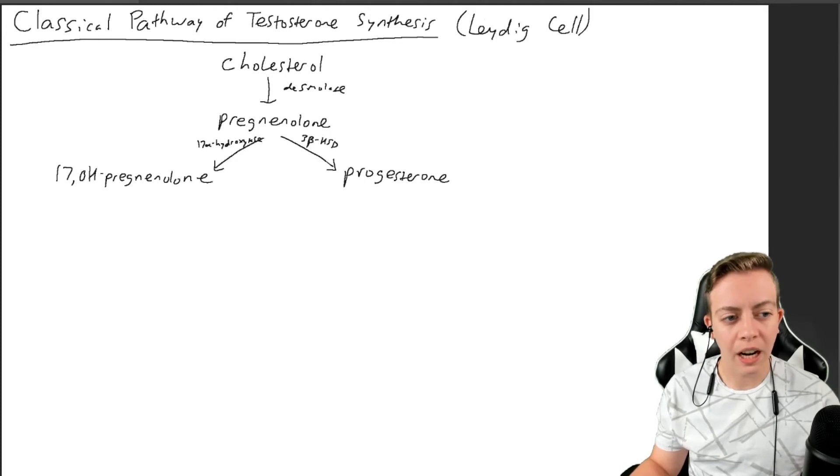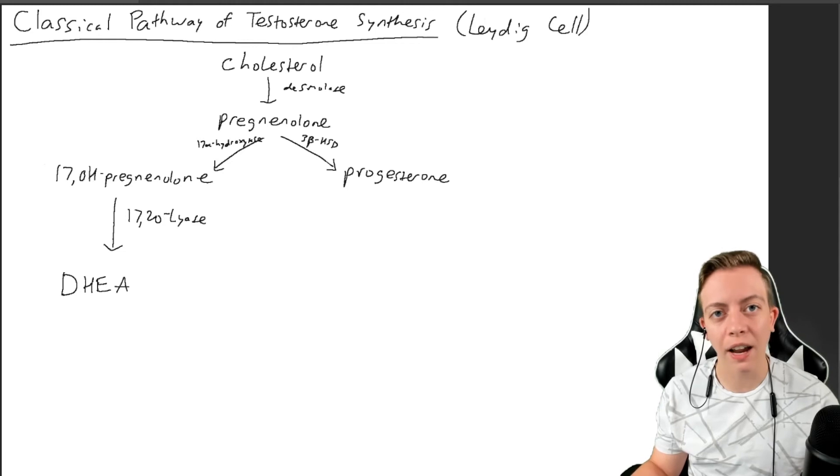So we have 17-hydroxypregnenolone, which will be converted by 17-20-lyase to DHEA. This is the same pathway that we saw in the adrenal gland, how we had DHEA produced from 17-hydroxypregnenolone.